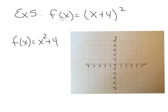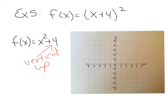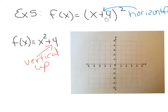Example 5 is on page 244: f of x equals x plus 4, in parentheses, squared. This is a different kind of shift. When the addition or subtraction is outside of the square, it's a vertical shift. But here the addition is inside the square, so this is a horizontal shift. Horizontal shifts go the opposite direction you'd expect: because this says plus, this is going to be a shift to the left — shift left 4 units.